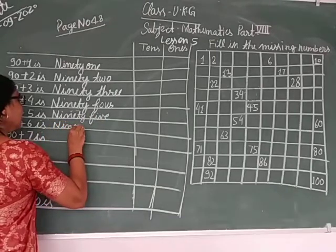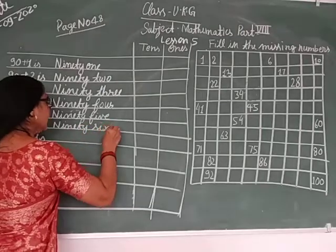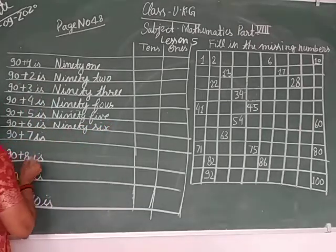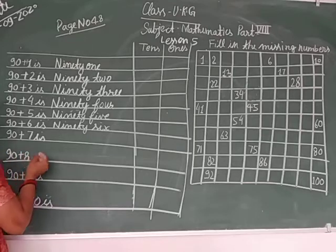Ninety-six, N-I-N-E-T-Y S-I-X. 96. 90 plus 7 is 97.